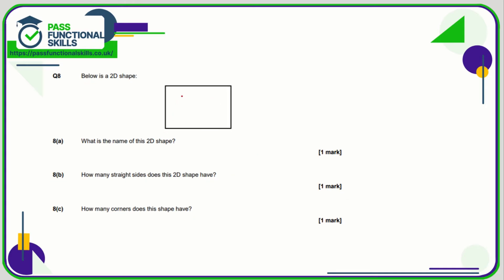Question eight: the name of this shape is a rectangle. How many straight sides does it have? One, two, three, four. And the number of corners? One, two, three, four as well.